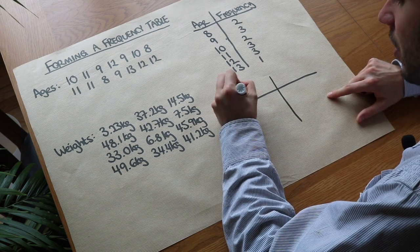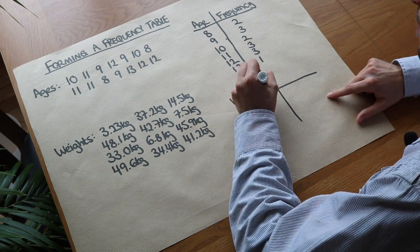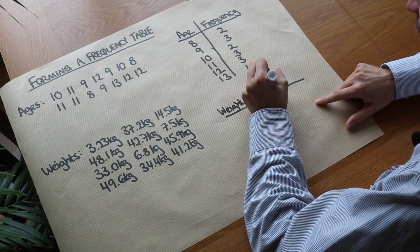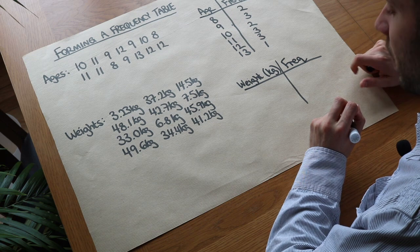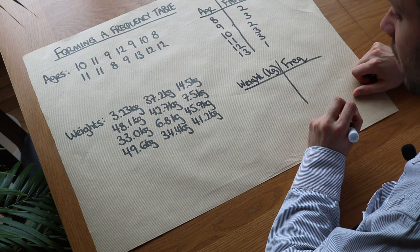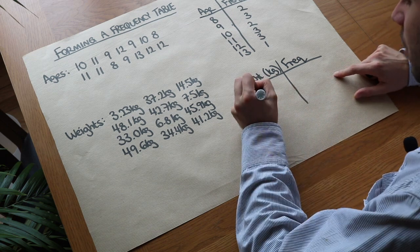So we put weight and let's put the unit kilograms. And then we've got our frequency column again. You can put freq for short. So what we might do is we might group them into intervals of ten. And let's just say W represented the weight.